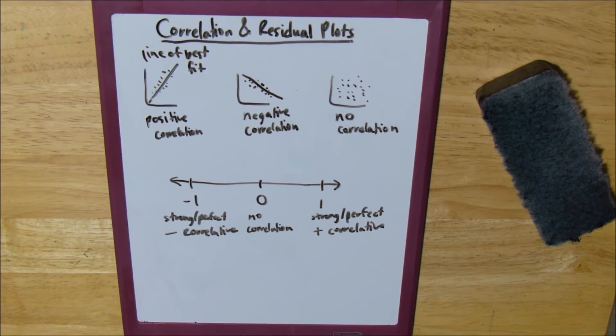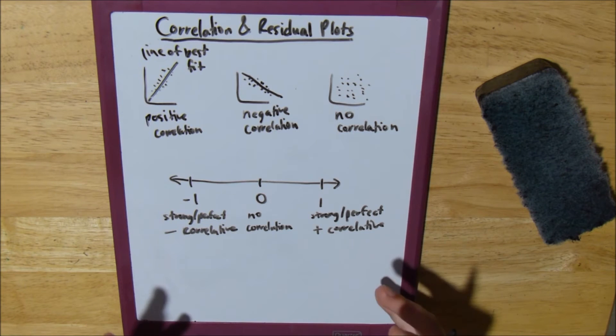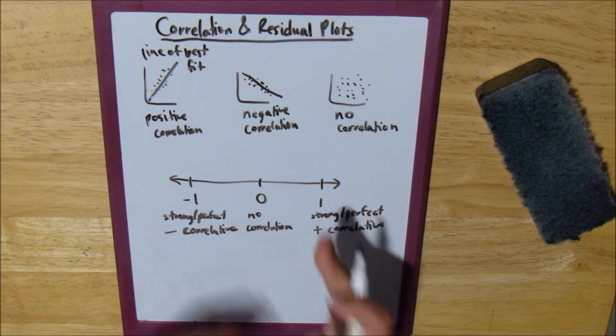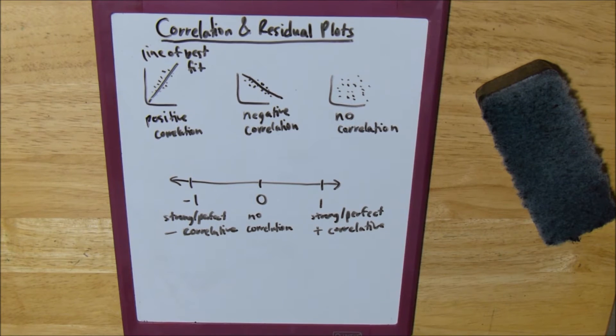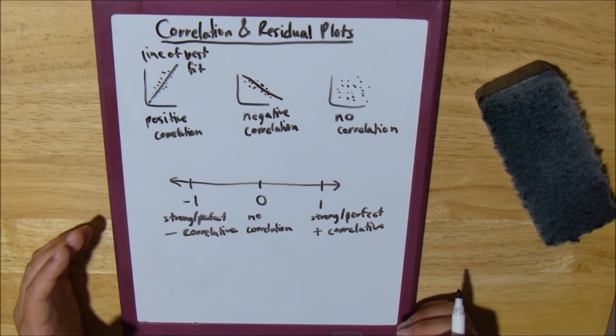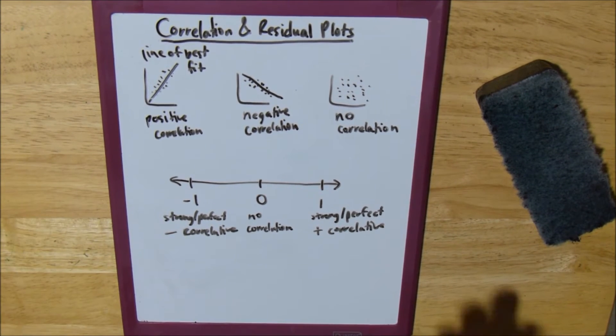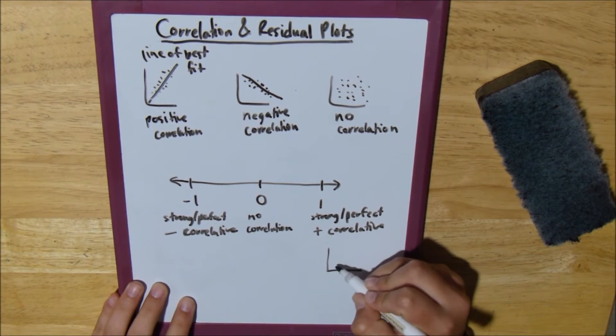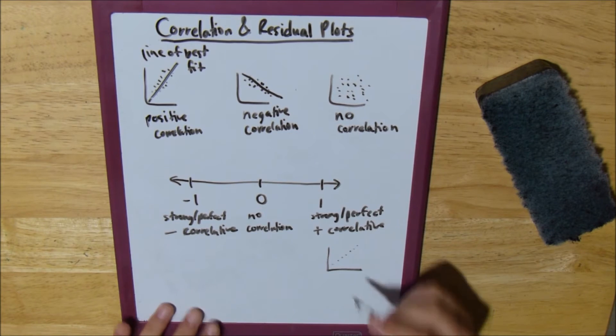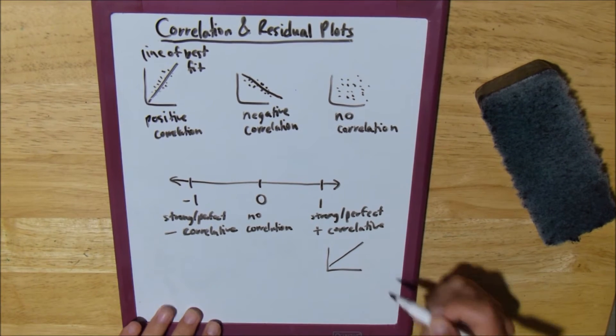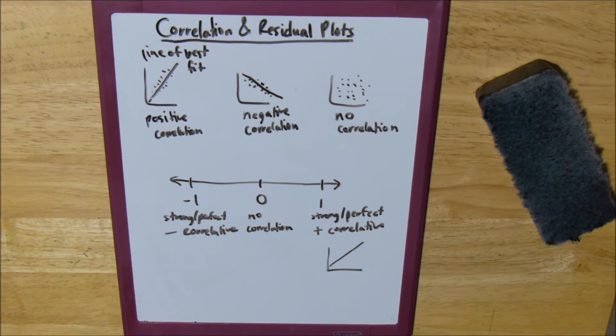And basically, all of the correlation has to be between negative 1 and 1, our correlation coefficients. So to have a correlation coefficient of 1 for a graph, you would literally just have points that are all in one straight line, that are all going positively. That's your perfect positive correlation.